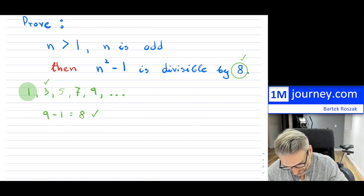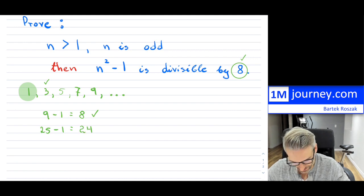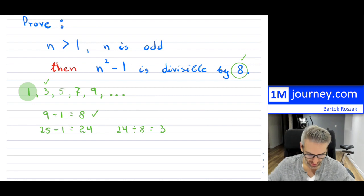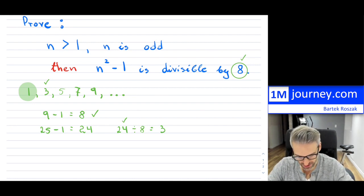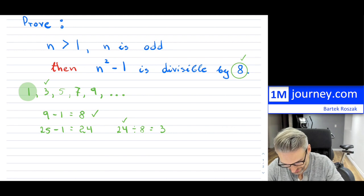Now if we take 5 and we square it, we get 25. 25 minus 1 is going to be equal to 24. And 24, if we would divide 24 by 8, we again are going to get a nice number. So 24 is divisible by 8. And then we can continue this. So if you take 7, so that's 49 minus 1, it's going to be 48.